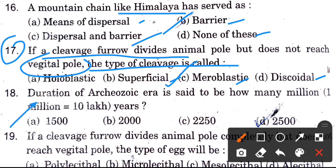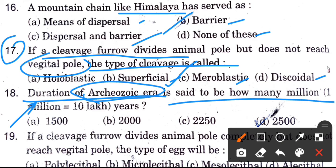Next question: Duration of the Archaeozoic era is said to be how many million years? Options are 1500, 2000, 1250, and 2500. The answer is 2500 million years.